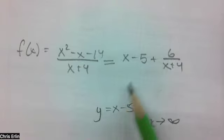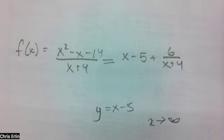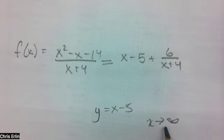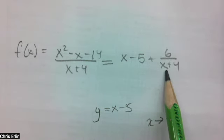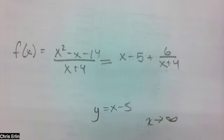When I look at as x approaches infinity, how far apart are these two expressions? Right, but when x is some huge number, a gazillion, if I take 6 and I divide it by a gazillion and 4, is this piece a big number or a little number? Little number.